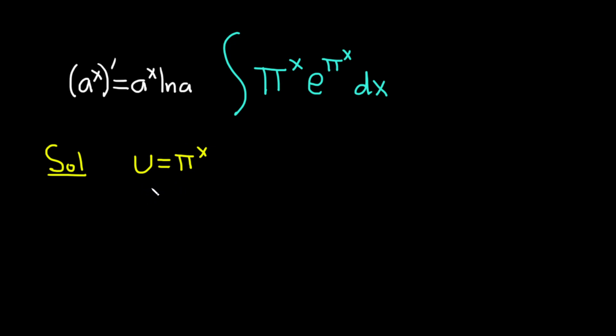So over here, taking the derivative on the left-hand side, we get du. On the right-hand side, we get π to the x times the natural log of π, and then we have the dx.